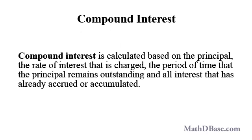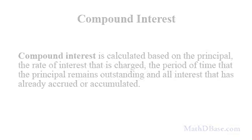Compound interest is calculated based on the principal, the rate of interest that is charged, the period of time that the principal remains outstanding, and all interest that has already accrued or accumulated. Here, the principal is increased by the addition of interest at the end of each interest period during the term of the loan.